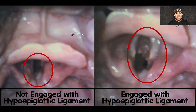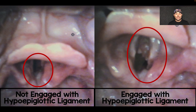So again, here are the two images side by side of the same airway using a MAC 4 standard geometry GlideScope blade, and again you can see once you engage with that hypoepiglottic ligament how much better your view will be.